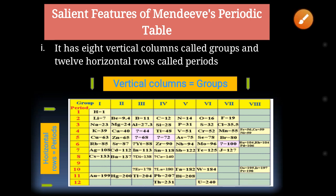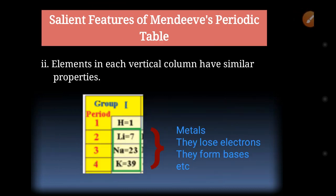The second important point is that elements in each vertical column have similar properties. For example, in Group 1A, lithium, sodium, and potassium are placed together. All of these have the same properties — they are metals, they lose electrons, they form bases, and so on. Elements arranged in the same group have similar properties.